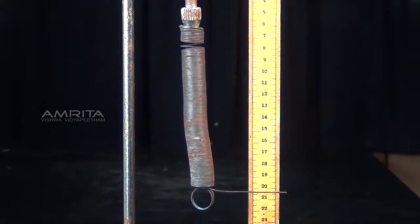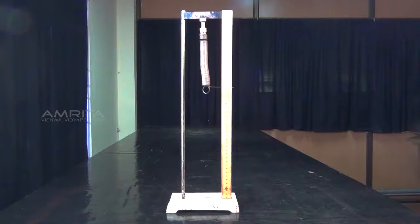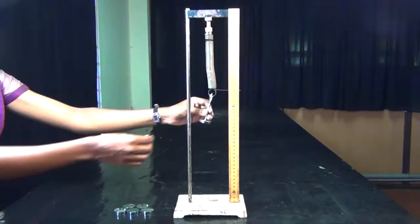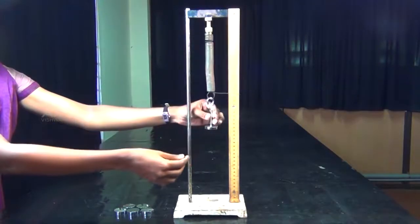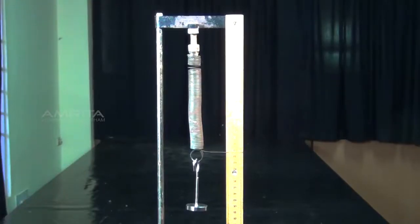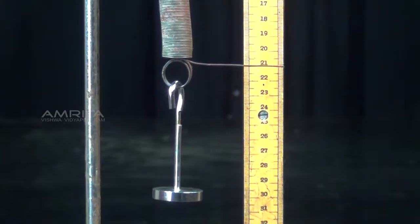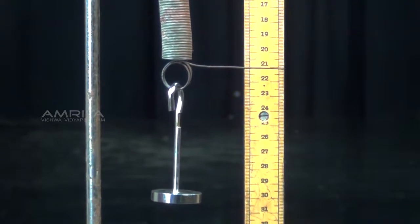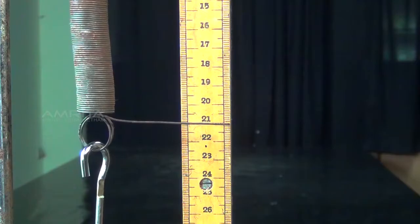Procedure. The spring with fine pointer is suspended from a rigid support. Attach a weight hanger for 50g slotted weights from its lower end which will act as dead load. Set the vertical wooden scale such that the tip of the pointer comes to the divisions on the scale but does not touch the scale.